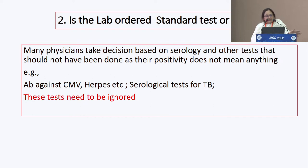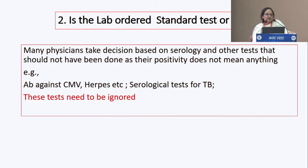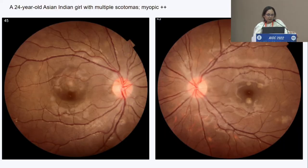The second scenario is whether the lab ordered is a standard test or not, because many physicians take decisions based on serology and other tests which should not have been done because their positivity does not mean anything. Examples are antibodies against CMV, herpes, or serological tests for TB — if a patient is carrying these tests, they need to be ignored.